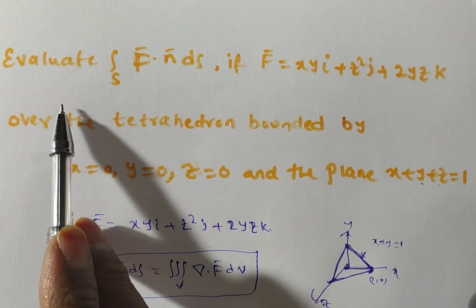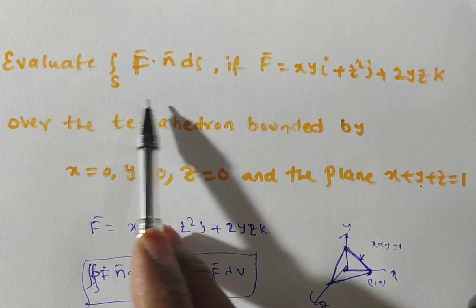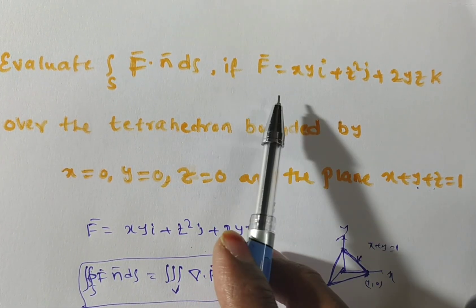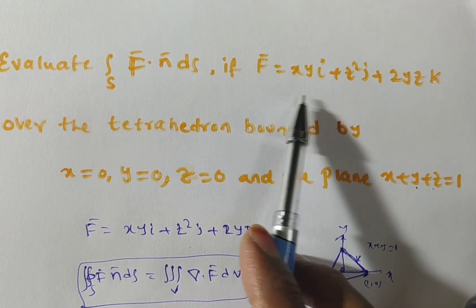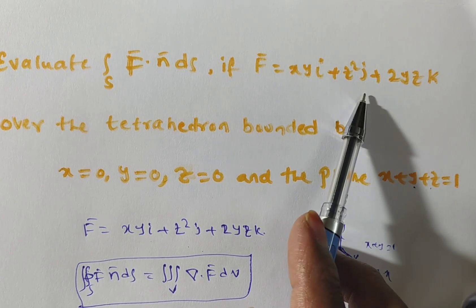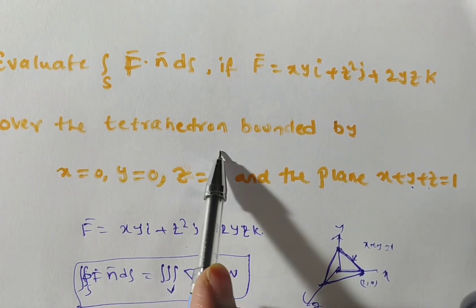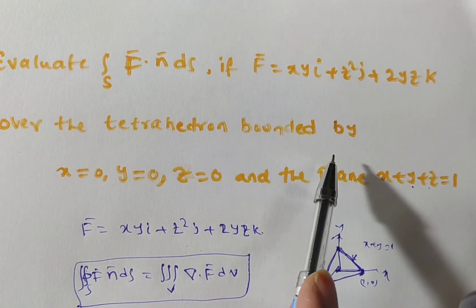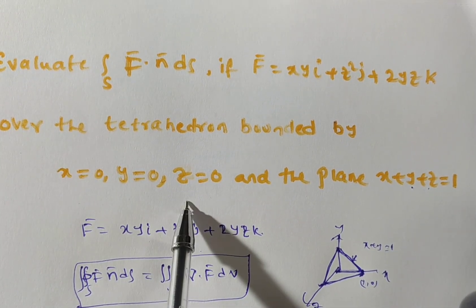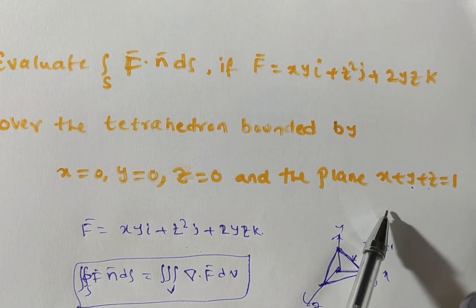The given problem is: evaluate the integral over S of f̄ · n̄ dS, where f̄ = xyi + z²j + 2yzk, over the tetrahedron bounded by x = 0, y = 0, z = 0, and the plane x + y + z = 1.